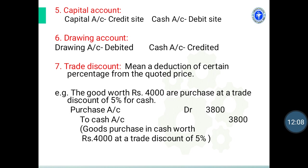Seventh rule — trade discount. Trade discount means the deduction of a certain percentage from the quoted price. No journal entry is made for trade discount because it is deducted directly from the cash memo or invoice. For example, goods worth Rs.4000 purchased at a trade discount of 5% for cash — 5% is deducted from Rs.4000, leaving Rs.3800, which appears directly on the bill, so no separate entry is needed.